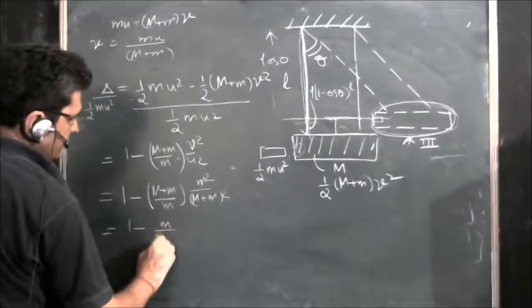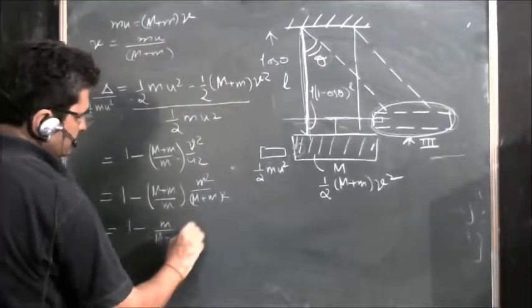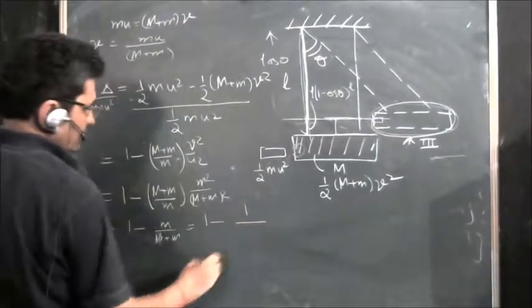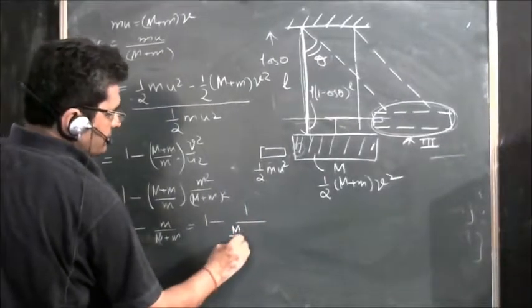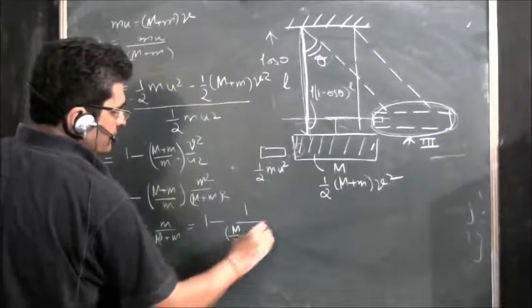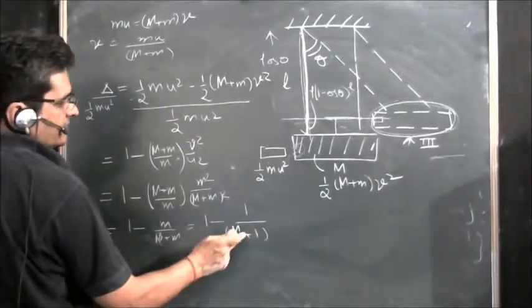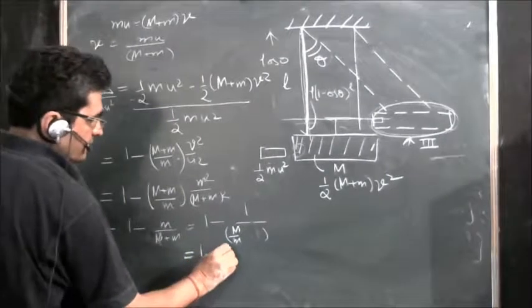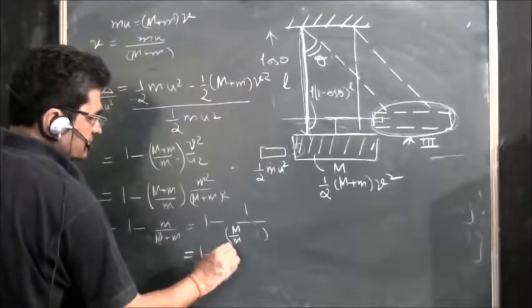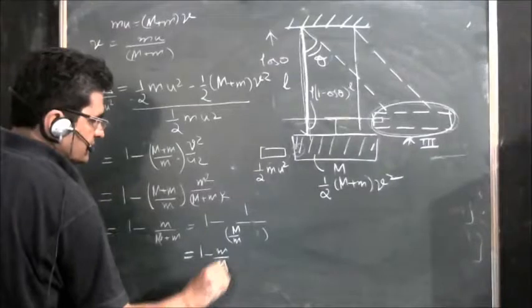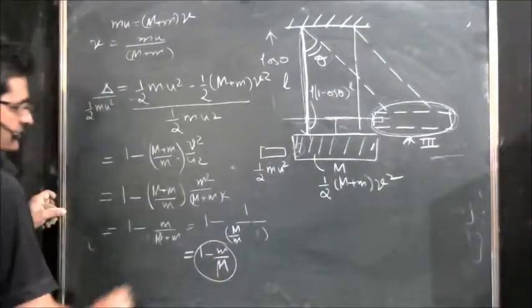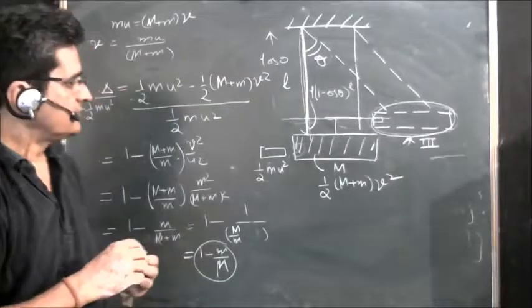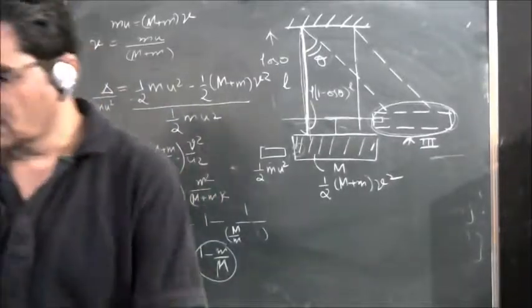So V²/U² = m²/(M+m)². This gives the fraction as 1 − m/(M+m). Since M is very large compared to m, the fraction of energy lost as heat is approximately M/(M+m). That is the answer. Thank you.